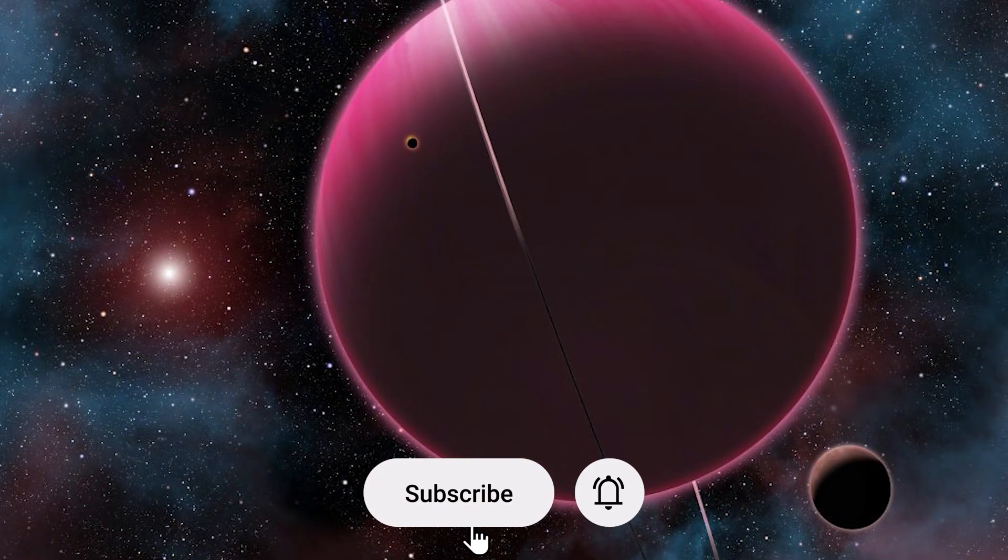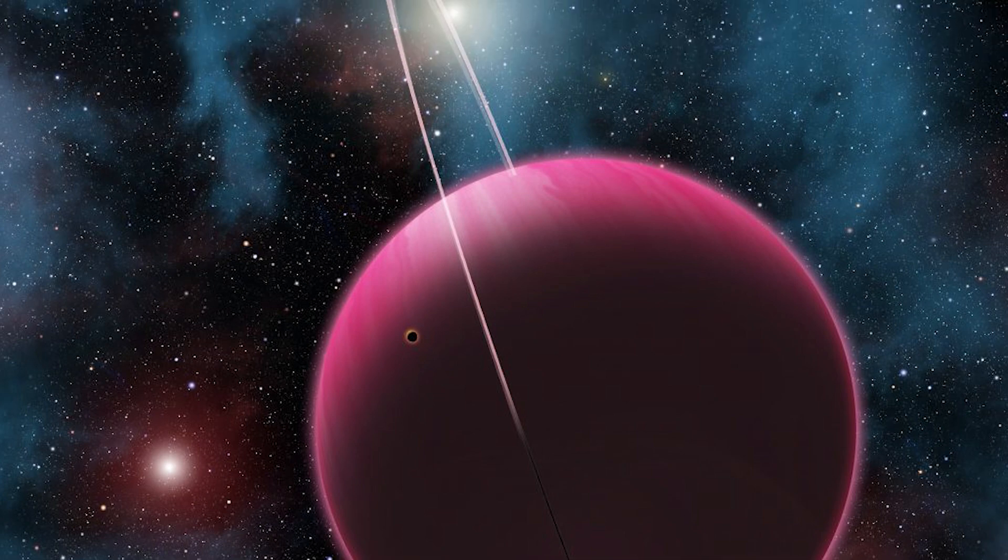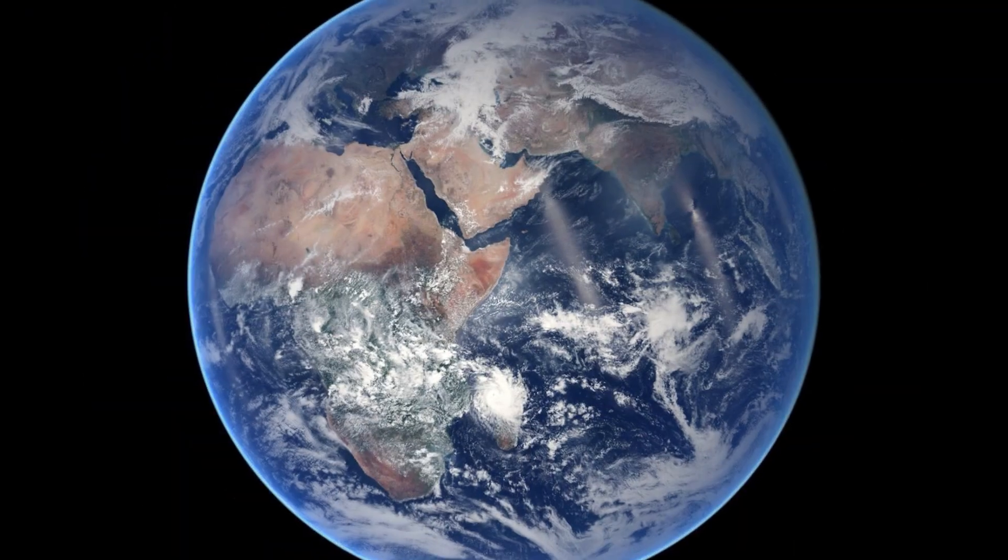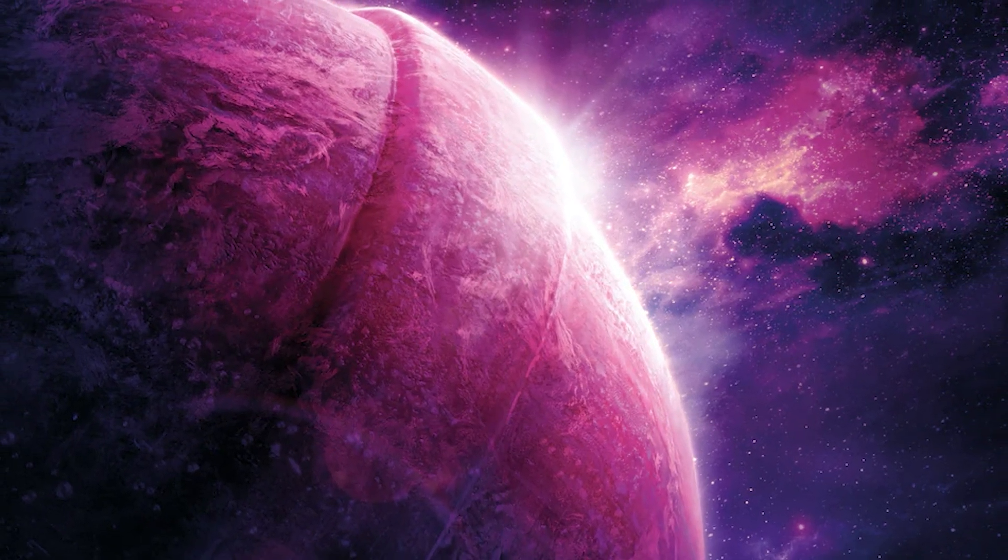Far away in space, there's a unique exoplanet named GJ504b, situated 57 light-years from Earth. Unlike our familiar blue and green Earth, GJ504b is pink, which is quite an odd color for a planet.